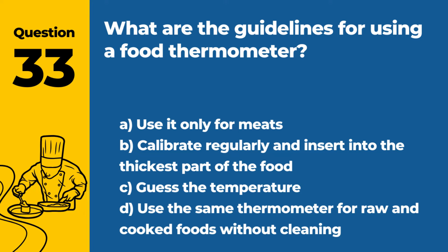Question 33. What are the guidelines for using a food thermometer? a. Use it only for meats. b. Calibrate regularly and insert into the thickest part of the food. c. Guess the temperature. d. Use the same thermometer for raw and cooked foods without cleaning. Answer b. Calibrate regularly and insert into the thickest part of the food. The guidelines for using a food thermometer include calibrating it regularly and inserting it into the thickest part of the food to ensure accurate temperature readings.